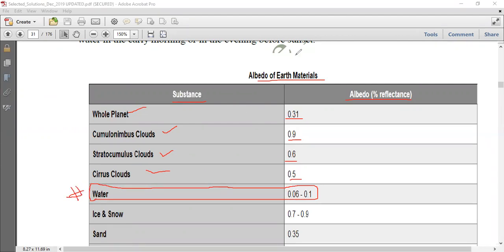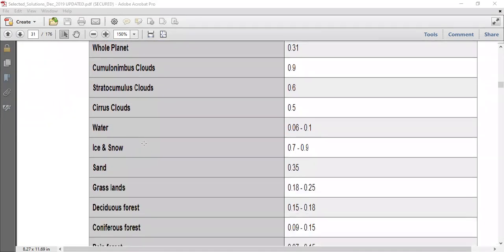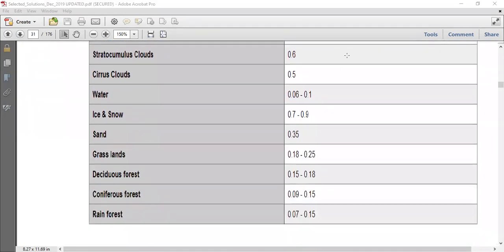We have other substances also down the line which are important from examination point of view. We have ice and snow which ranges from 0.7 to 0.9.